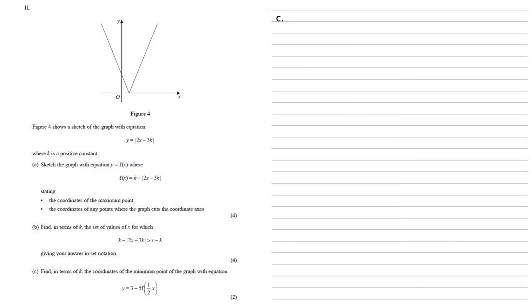For part c, we need to find in terms of k, the coordinates of the minimum point of the graph with equation y equals 3 minus 5 lots of f half x. To do this, we're going to use our result from part a, where we found the maximum point of f of x, and that maximum was 3k over 2, k. Now let's think about what happens if we've got a half inside that function. It's going to stretch along the x axis by the inverse of that half. So our x coordinates are going to double, but it doesn't affect the height of the y.